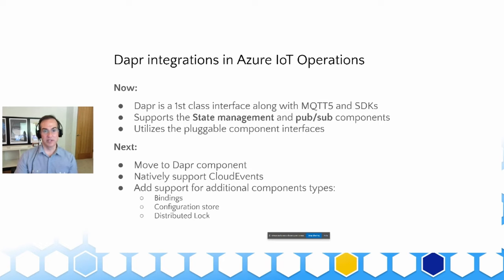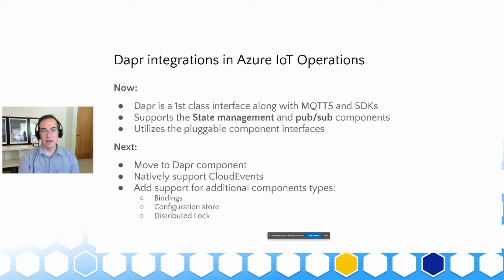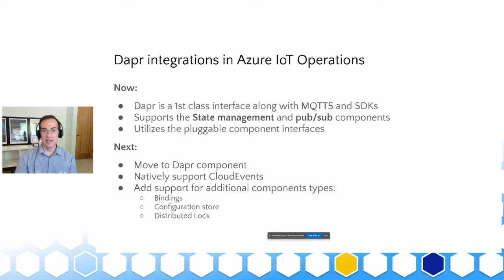In the future we plan to contribute back to Dapper and make this a primary Dapper component. We're also looking at moving towards becoming part of the Dapper code base and away from pluggable components. We plan to add native cloud events support — at the moment we mostly focus on raw MQTT events because that's where our customers are today. We also want to evaluate additional component types such as bindings, configuration store, and distributed lock, which aren't currently available as pluggable components.